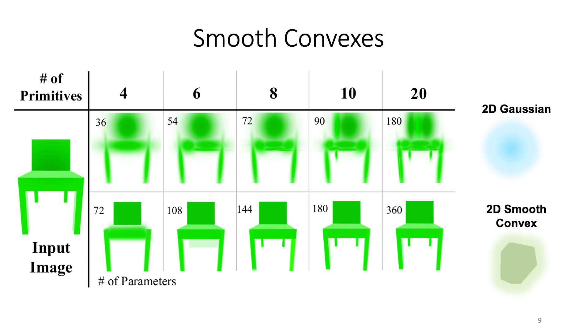So if we try to fit 2D Gaussians and 2D smooth convexes on the chair example for this toy example, you can see that the 2D smooth convexes can fit the chair with fewer number of elements and primitives, but also even overall a fewer number of parameters.